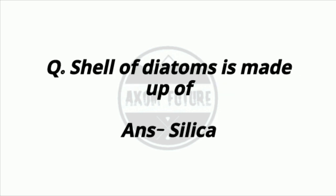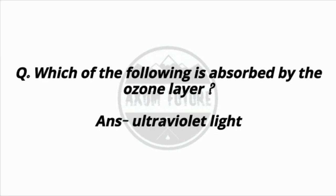Question 12: Cell walls of diatoms are made up of silica. Question 13: Which of the following is absorbed by the ozone layer? The answer is ultraviolet light, UV light.